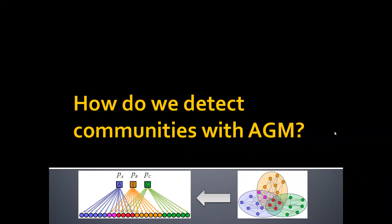In the previous part we talked about how to generate a network from a model. Next let's talk about the inverse process, how to find the best model given the network and therefore detect communities.